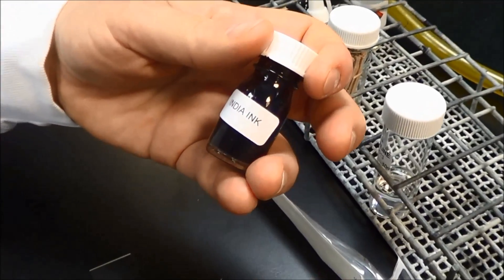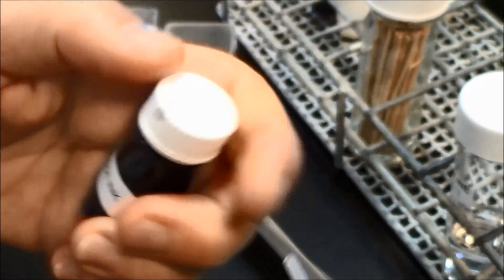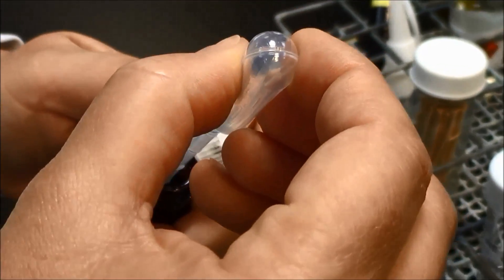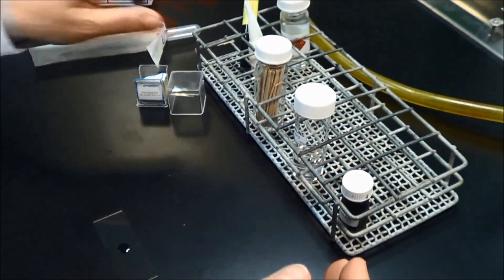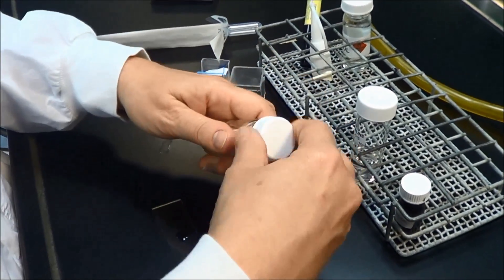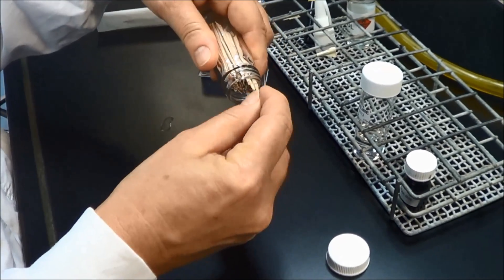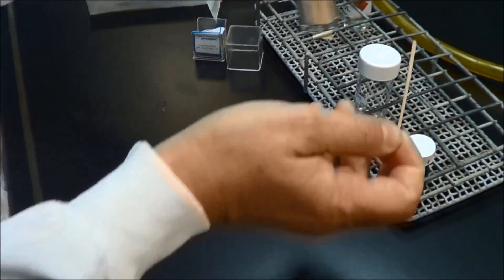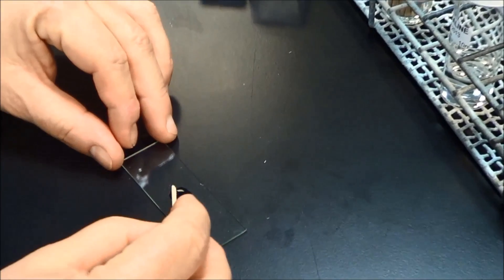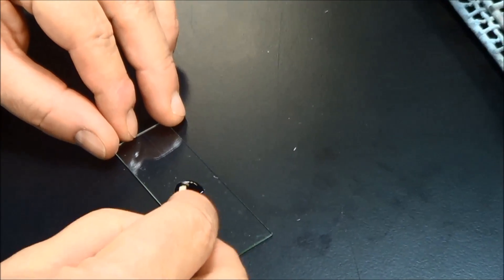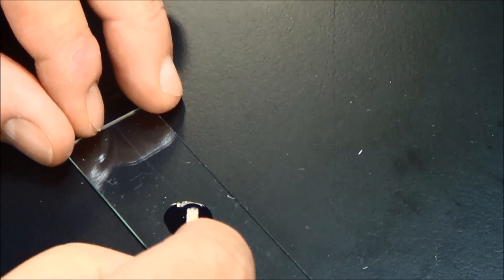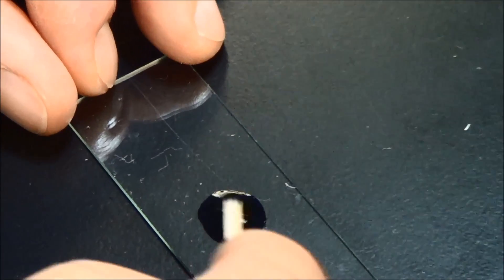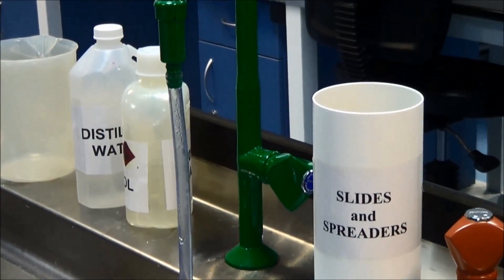Add an equal volume of India ink to the yeast suspension using a drop from a plastic transfer pipette. Mix with a toothpick until the suspension is homogeneous. Discard the toothpick into disinfectant.